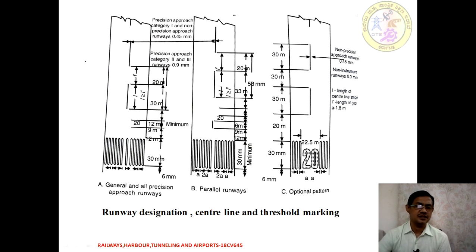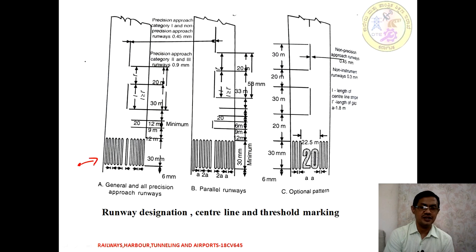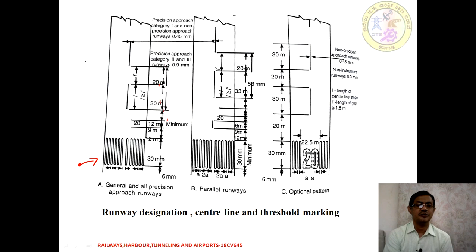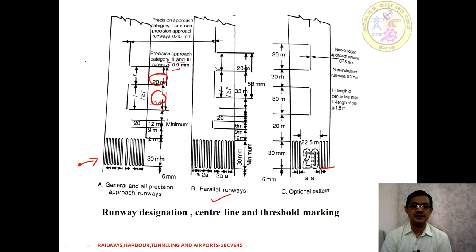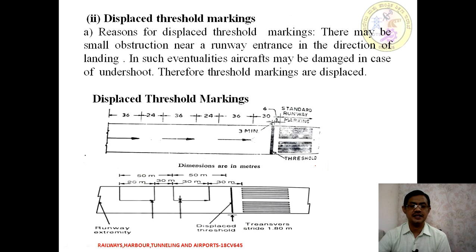Runway designation, centerline, and threshold markings are shown in the image. These threshold lines are marked with 30 mm thick color having 6 mm thick lines. For precision approach Category 1 and 2, the runway centerline has gaps of 20 meters and 30 meters respectively. This is how the marking is done for the precision approach of the runway and for parallel runways.